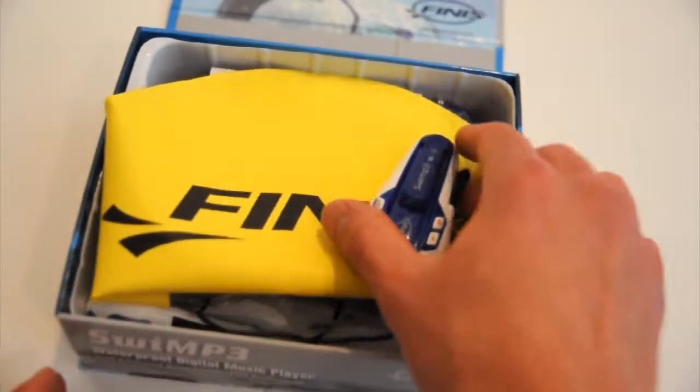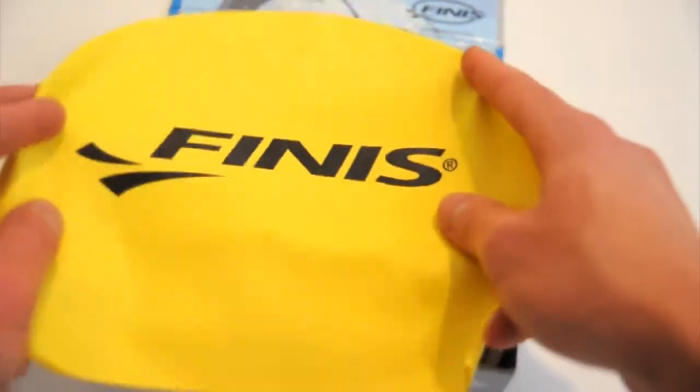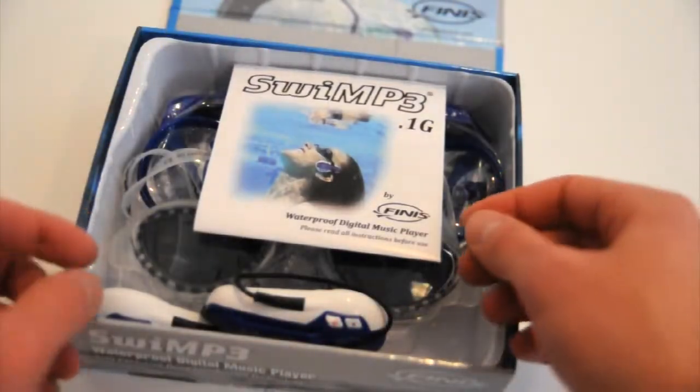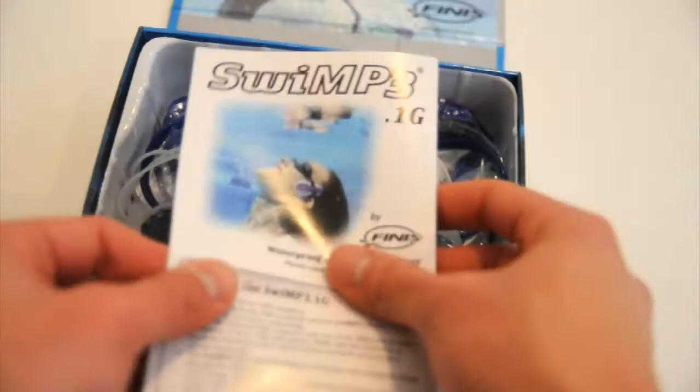And then what's inside is the unit. Regular latex swim cap with the Finis logo on that. I don't use swim caps, so I'll toss that. A little instruction manual. It's pretty brief and basic because the unit itself is pretty basic.